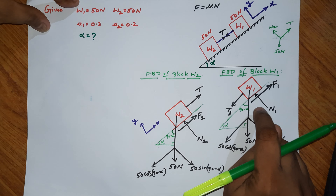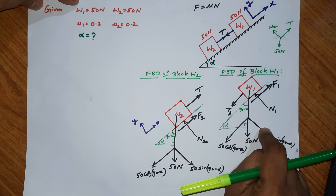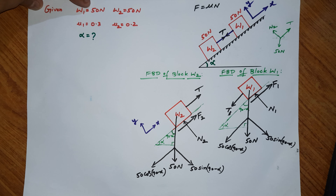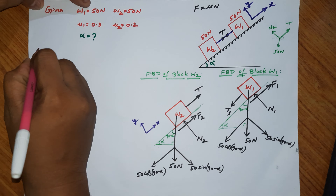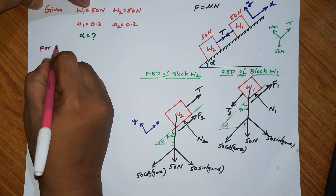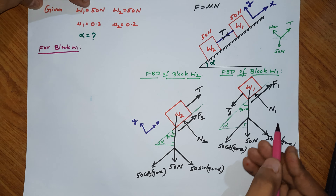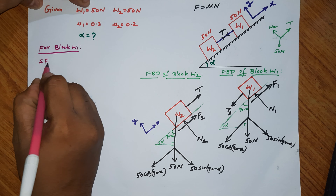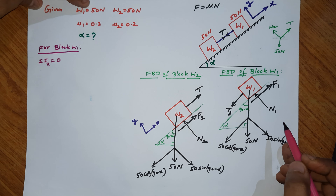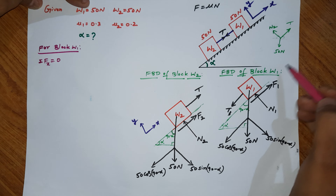For block W1, apply the first equilibrium equation: Sigma Fx = 0. Along the inclined plane in the x-direction, we identify all forces. F1 is in the positive x-direction, T is in the negative x-direction, and the component of the weight 50 cos(90 minus alpha) is also in the negative x-direction.